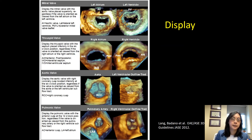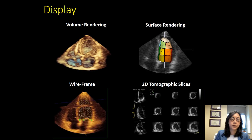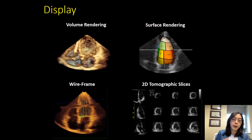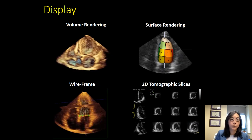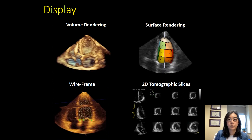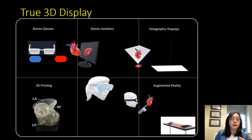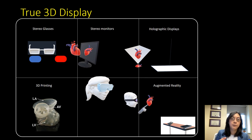Once you've rendered your data set you have to decide how to display it. The guidelines provide recommendations on how to orient your images and chambers. Most commonly we use volume rendering for display. You can also analyze your data set and create models — such as a mitral valve or left ventricle model — and present a surface rendering or wireframe rendering. You can also do slices through your 3D data set. Emerging display tools include stereo glasses or stereo monitors, holographic displays, 3D printing for procedural pre-planning, and virtual reality or augmented reality tools.